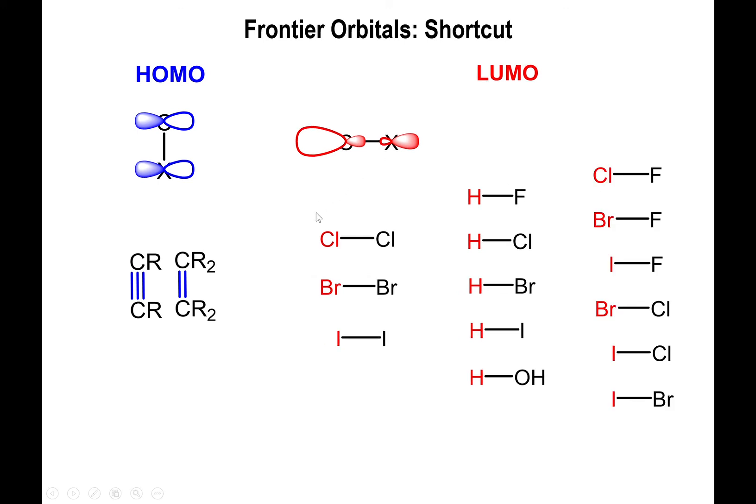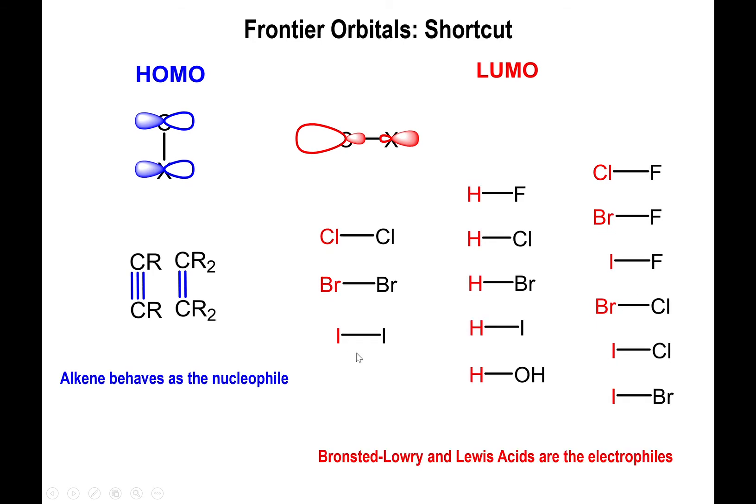And much like the homonuclear diatomic molecules, you could have heteronuclear diatomic molecules reacting in much the same manner. All right, so your alkenes and alkynes are going to behave as the nucleophiles, the things that provide the electrons, and any of these molecules which are pretty reactive on their own are regarded as the Lewis acids or electrophiles, the substances that will be acquiring the electrons.